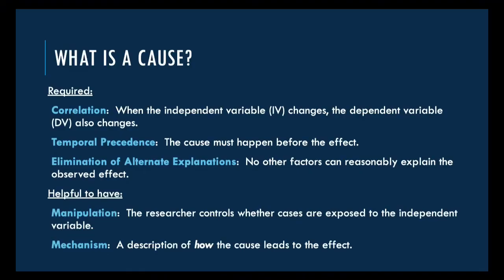In social science, we tend to use a formal definition of causality developed by the psychologist William Shadish, Thomas Cook, and Donald Campbell. According to this definition, there are three things you need to have to call something a cause. First, correlation.